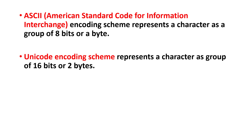The first encoding scheme is ASCII — American Standard Code for Information Interchange — which represents a character as a group of 8 bits, also called a byte. Unicode encoding scheme represents a character as a group of 16 bits, which can also be called 2 bytes.